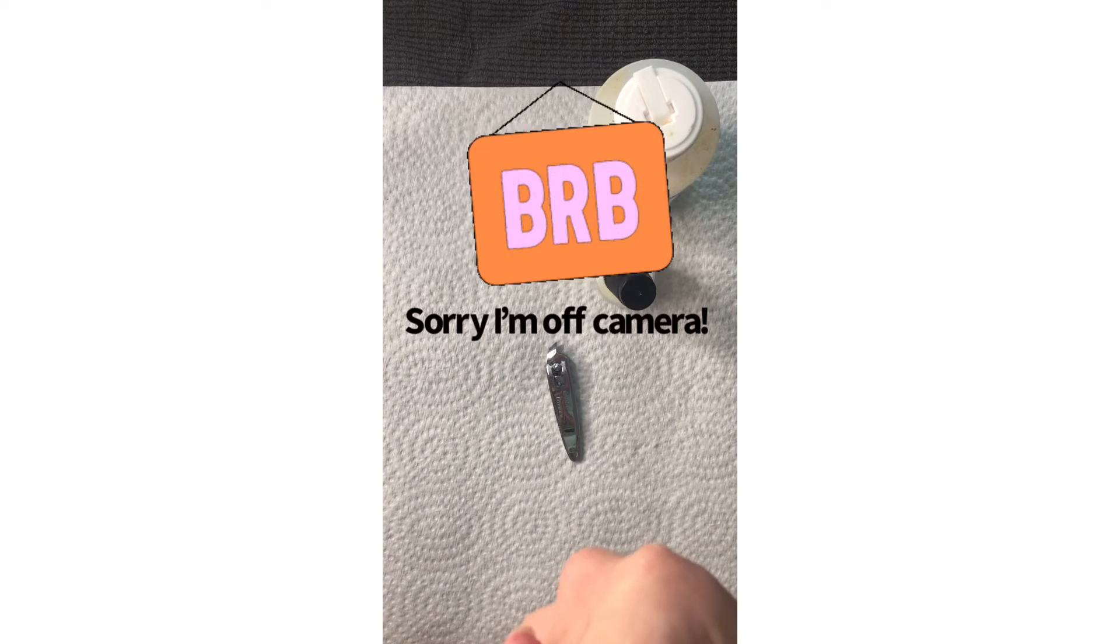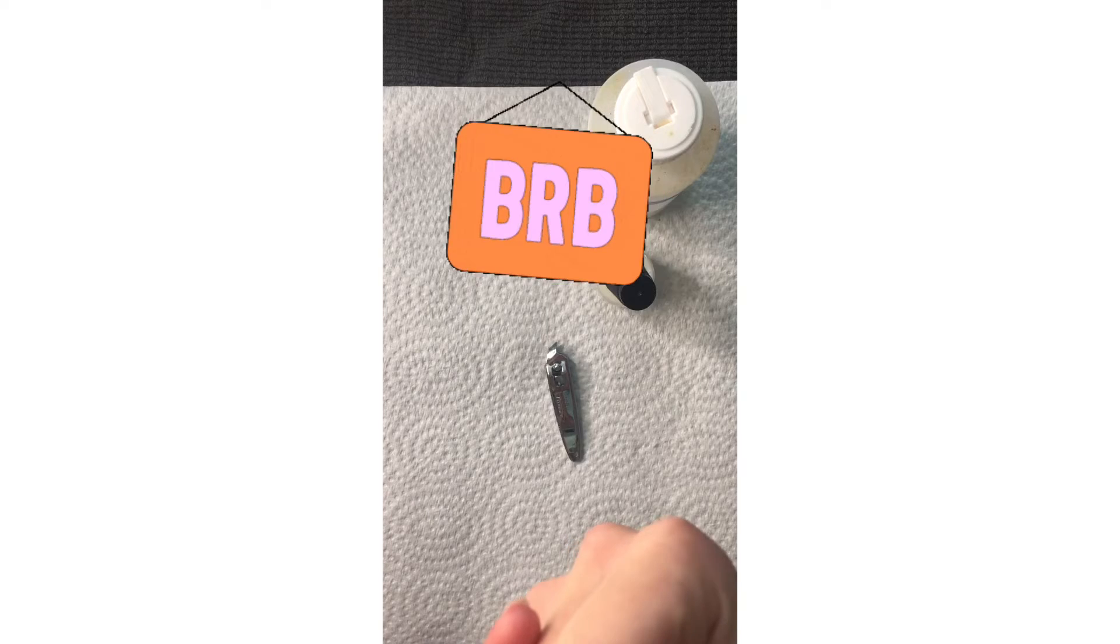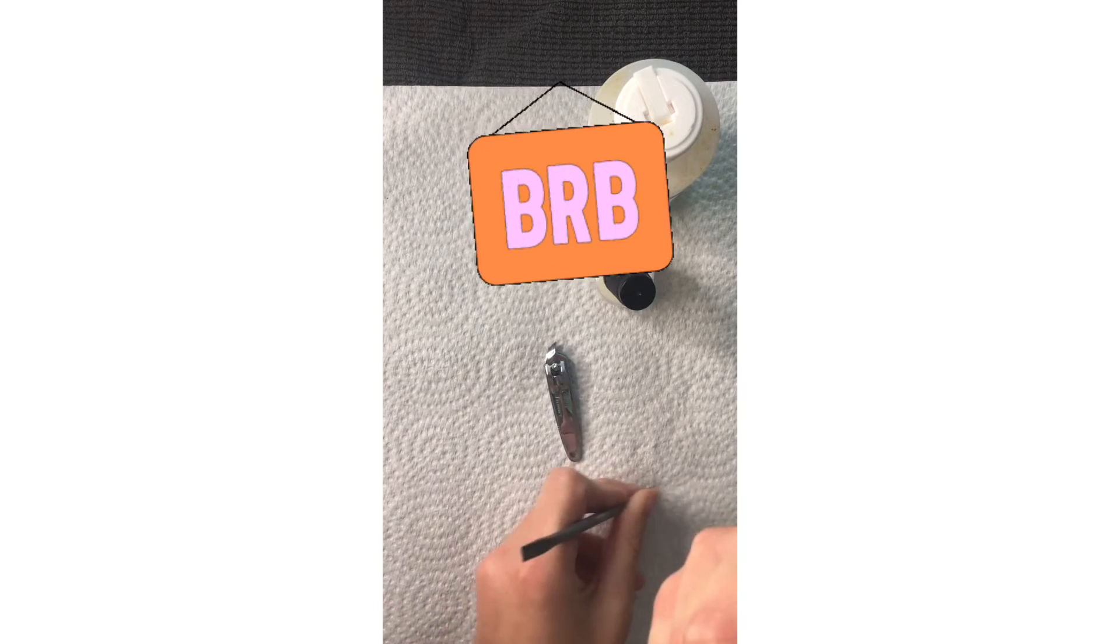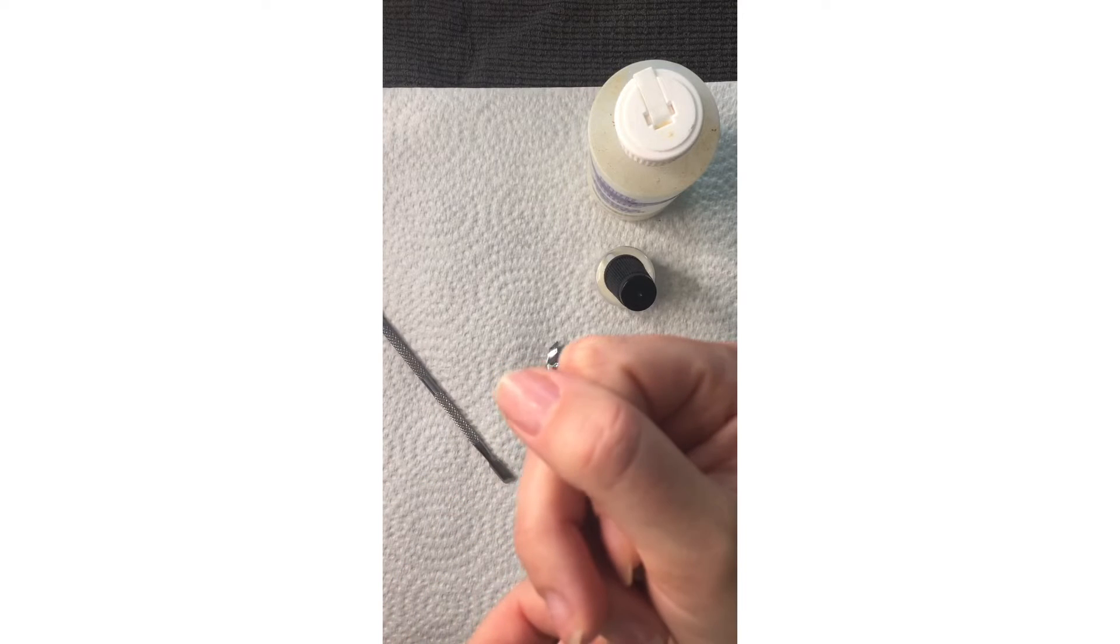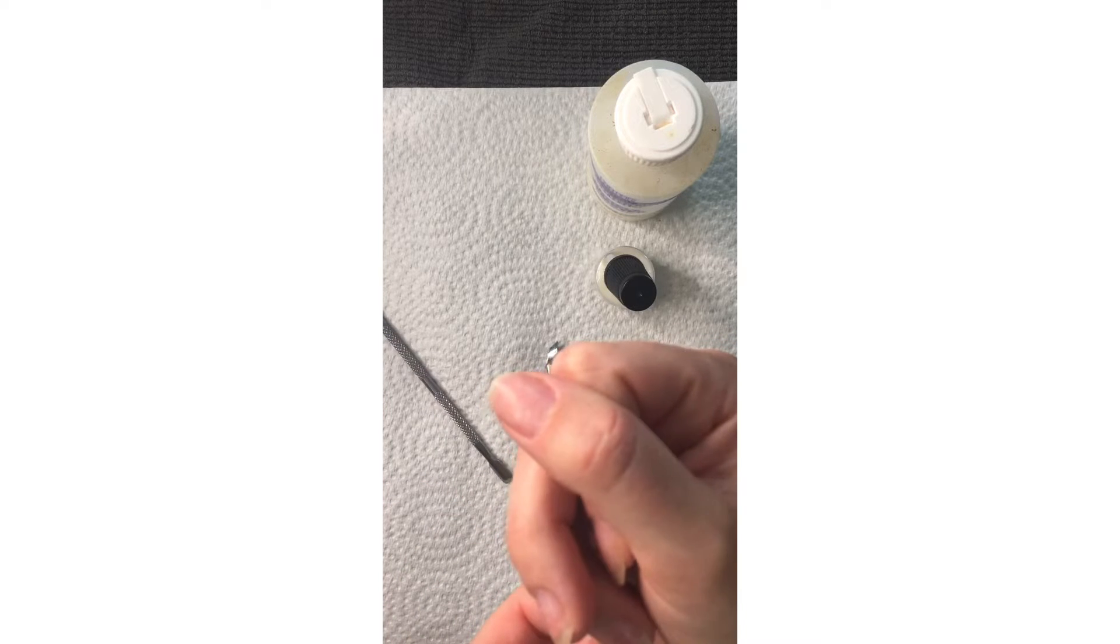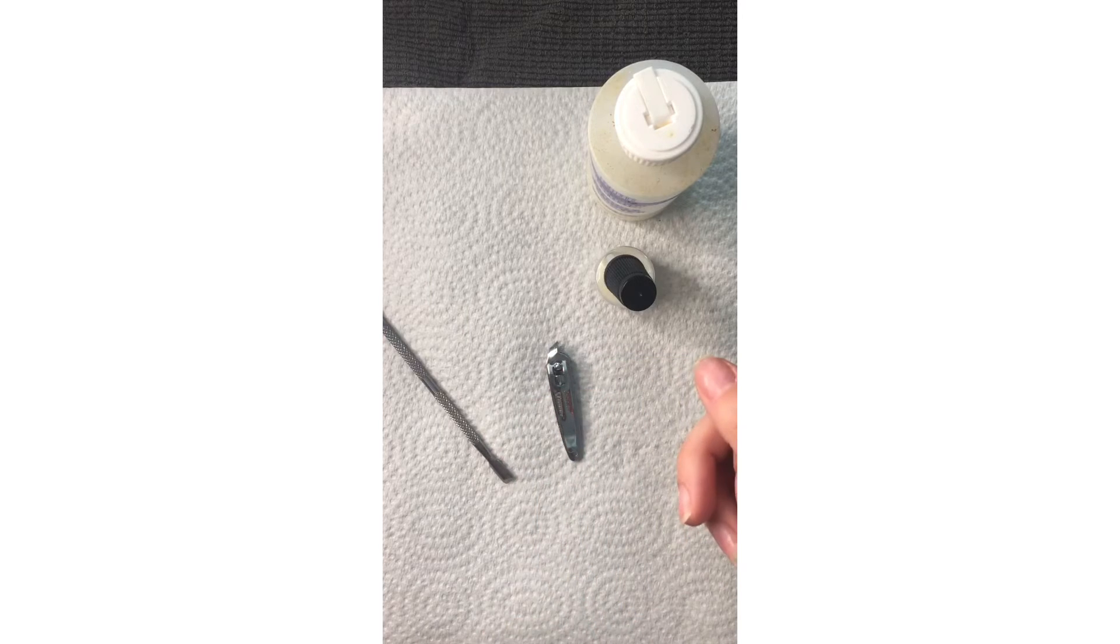It helps to get a better adhesion when you have really anything on your nail, whether it's press-ons or dip on your nails or gel polish—really anything, even nail polish. It will help it adhere better when you have all this dead skin removed.